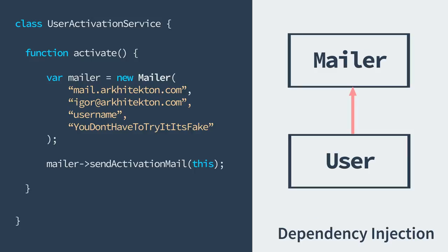So let's take a look at what dependency injection means. The goal of dependency injection is to invert the dependency responsibility. This means that our service will get the dependency instance via the constructor instead of instantiating it itself.